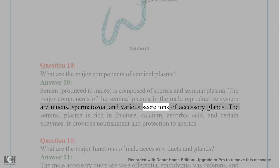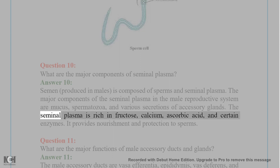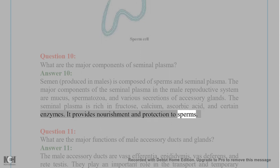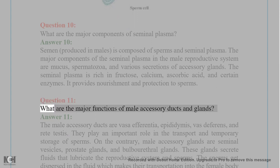The seminal plasma is rich in fructose, calcium, ascorbic acid, and certain enzymes. It provides nourishment and protection to sperms. Question 11: What are the major functions of male accessory ducts and glands?